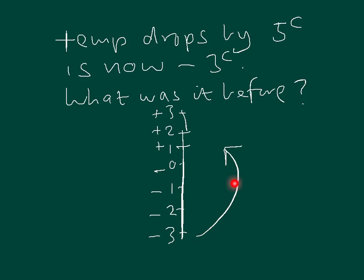The temperature dropped by 5 and it's now minus 3, so if we go up in the other direction we'll find out what it was before the drop. Counting up from minus 3 by 1, 2, 3, 4, 5 — we can see that 5 degrees higher than minus 3 is plus 2. So the answer is 2 degrees centigrade. We can check that by going to 2 and dropping by 5: from 2, go 1, 2, 3, 4, 5 — we end up at minus 3. So we know the answer of 2 degrees centigrade is correct.